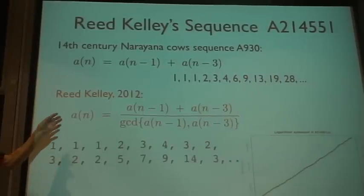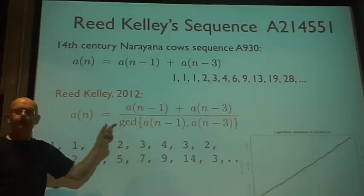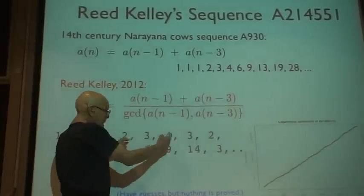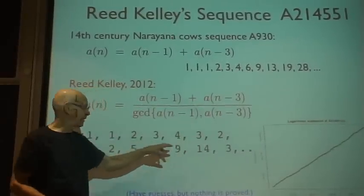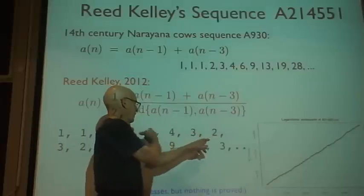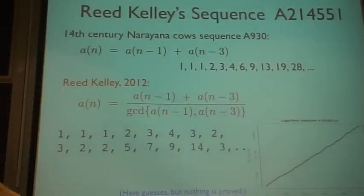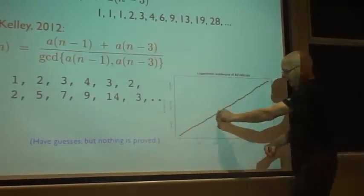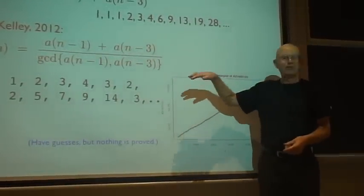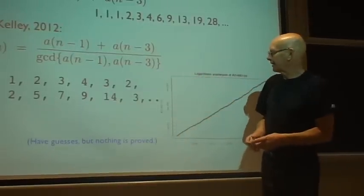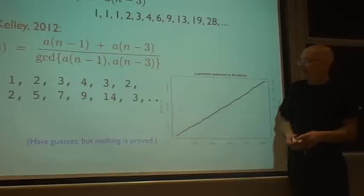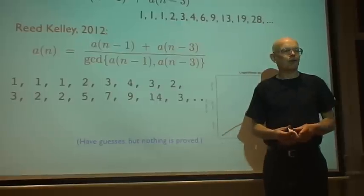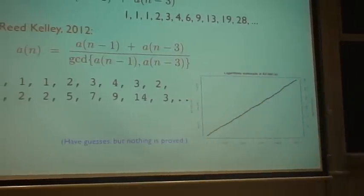Last year, Reed Kelley submitted a variation on this. You take the sum of those two terms, but you divide by their GCD. So 1, 1, 1. 1 plus 2 is 3. 1 plus 3 is 4. 2 plus 4 is 6. But we divide by the GCD, which is 2, getting 3. And so on. 3 plus 3 is 6. We divide by 3, because that's the GCD, and we get 2. And so on. And if you plot this, this is 1,000 terms. And you get a very wobbly line. This is not converging in any obvious manner. It seems that it's about, the nth term is roughly e to the, about n over 9. But nothing is known. We have no non-trivial bounds on this sequence. Nothing is known about its growth. I think it's a very nice question.